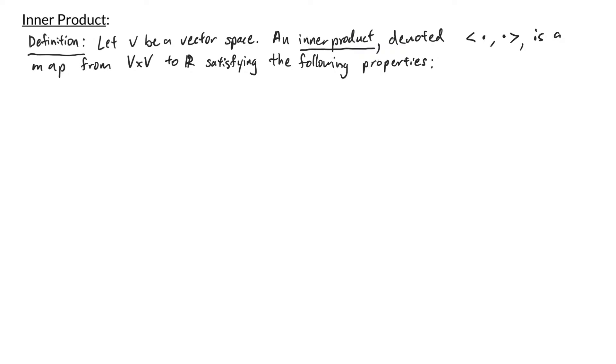In this video we are going to give a brief overview of inner products. If v is a vector space, then the inner product is defined to be a map from v times v to ℝ satisfying the following properties.